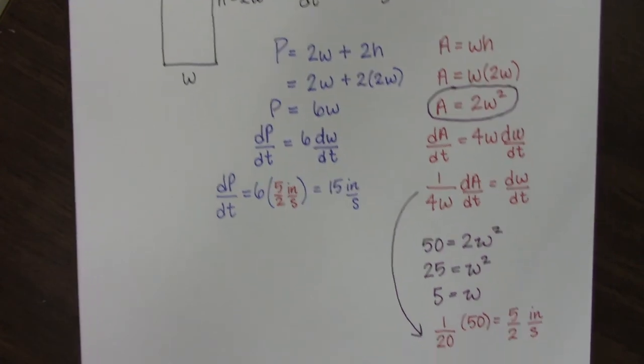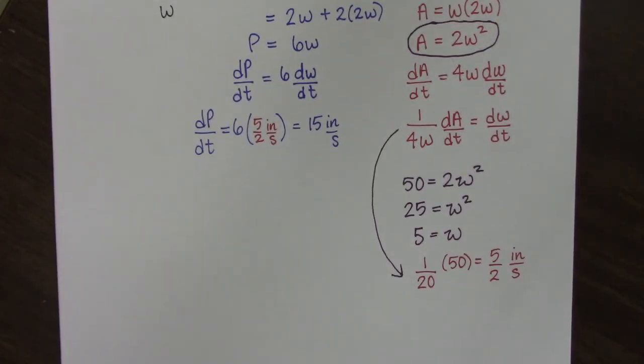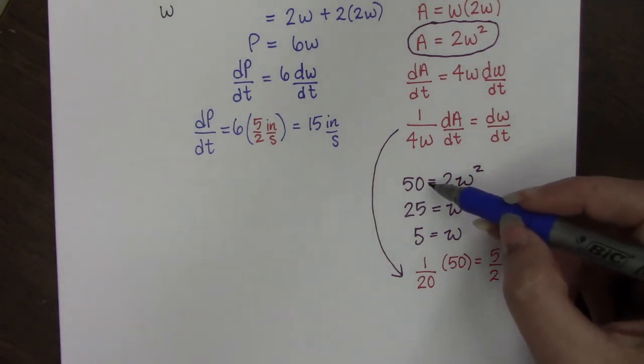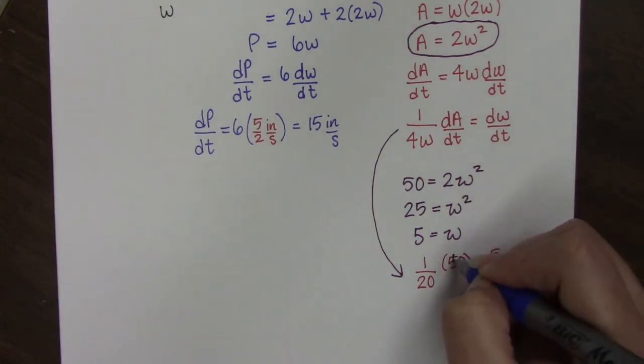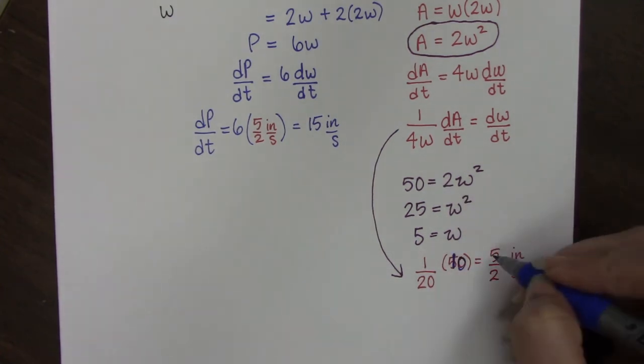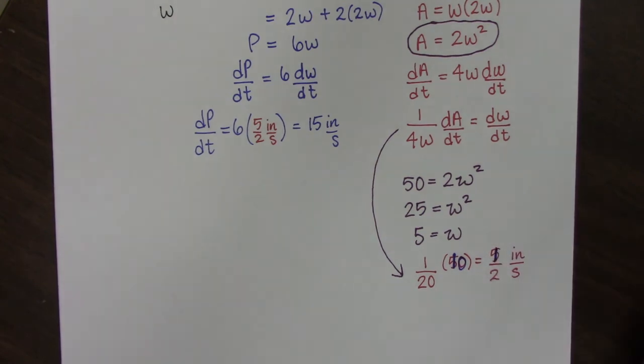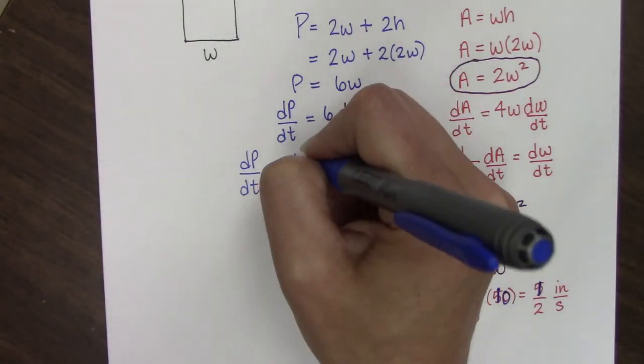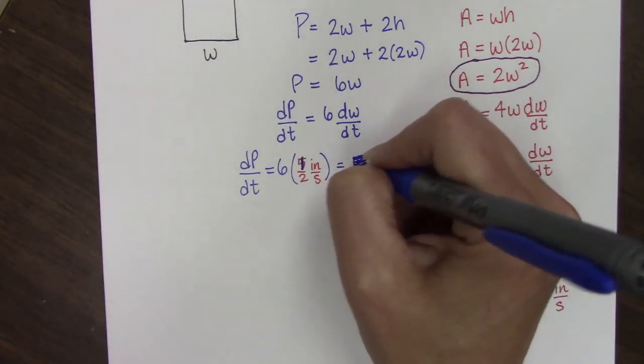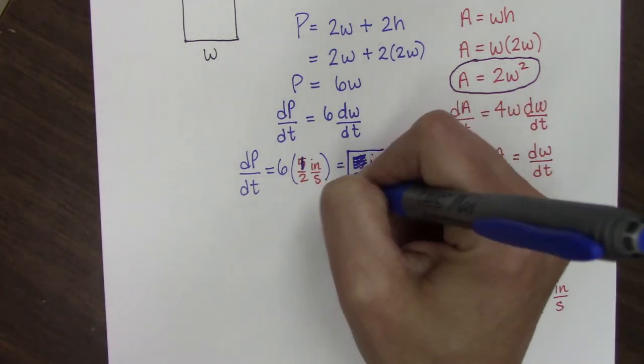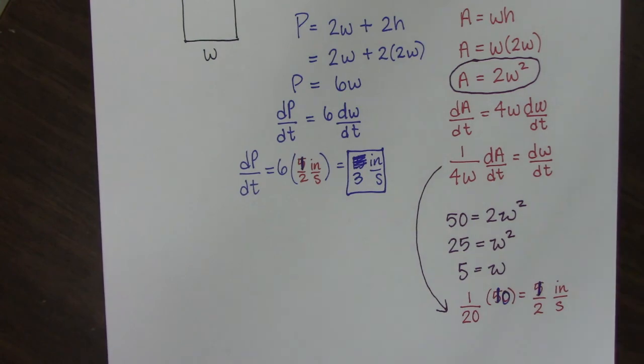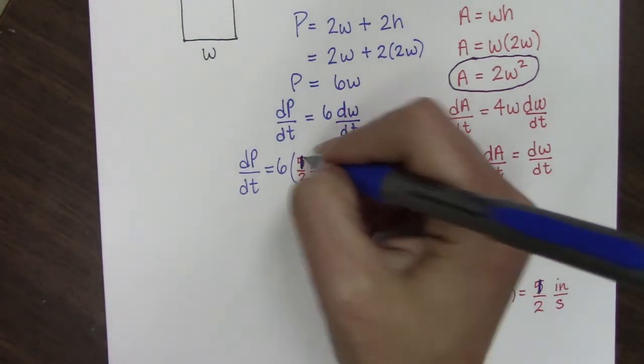Oops, sorry. For those of you screaming at the screen, you caught my mistake. 50 was the area, the rate was 10. So this should be a 10. So 10 divided by 20 is one half. So if I come back up here, I get one half, which makes this a 3. So I hope you guys are all happy now. Just caught myself.